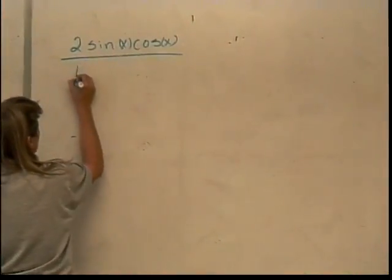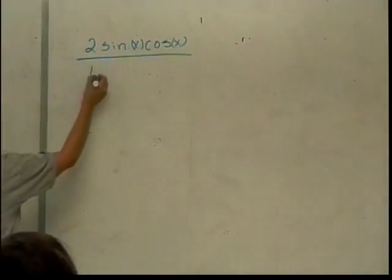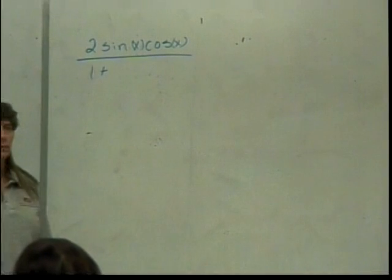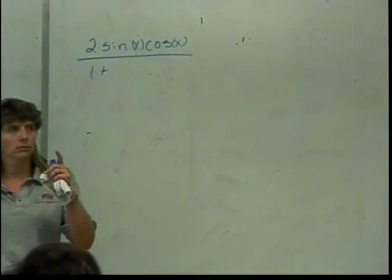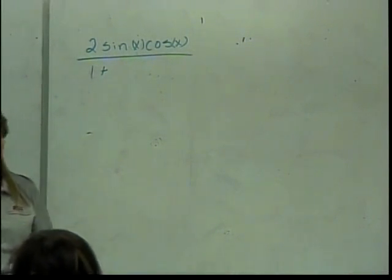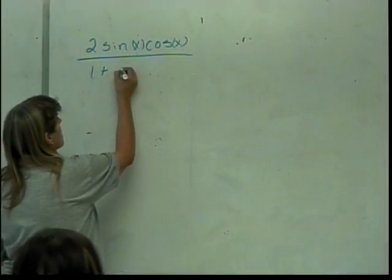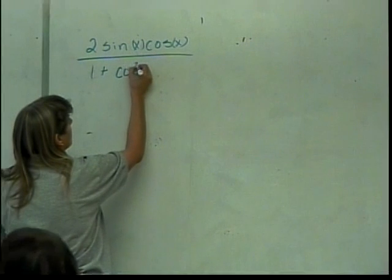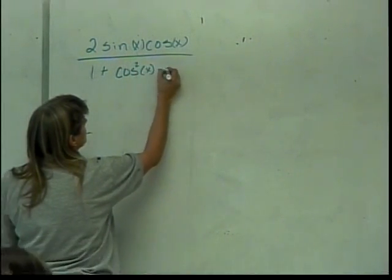And then on the bottom I have 1, is it plus or minus? Plus. And then what's the formula for cosine of 2x, that's what we're doing. The cosine of 2x minus sin²(x).